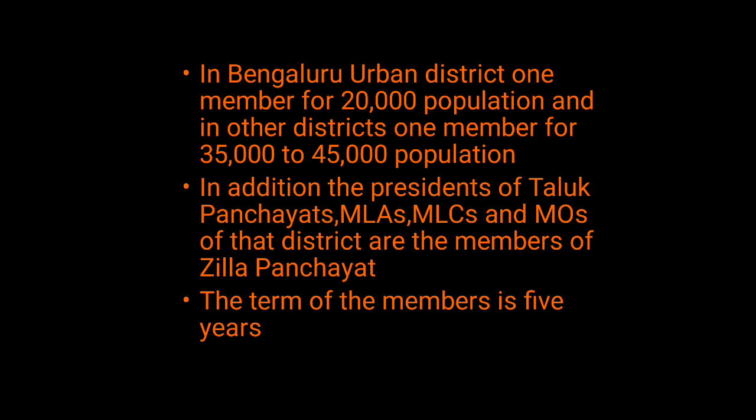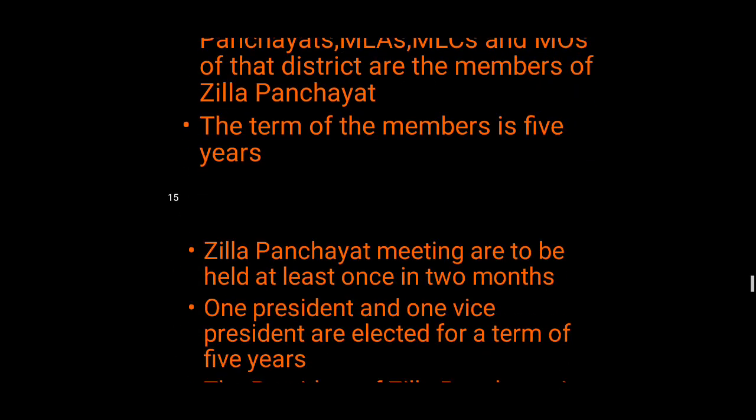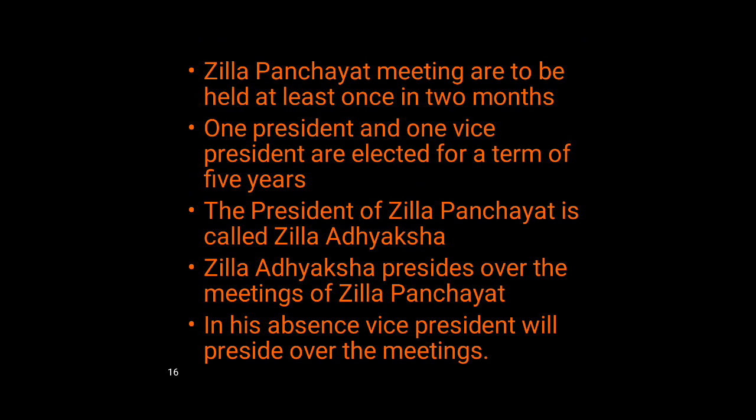Jilla Panchayat meetings are to be held at least once in two months. One president and one vice president are elected for a term of 5 years. The president of the Jilla Panchayat is called Jilla Adhyaksha. The Jilla Adhyaksha presides over the meetings, and in his absence, the vice president presides.